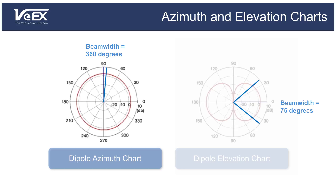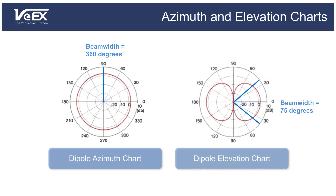On our dipole azimuth chart, the beam width is, by definition, 360 degrees. Antennas with large beam widths, like the dipole, provide lower gain but wider coverage, whereas antennas with narrow beam widths, like the directional antenna, have a higher gain but smaller coverage area.